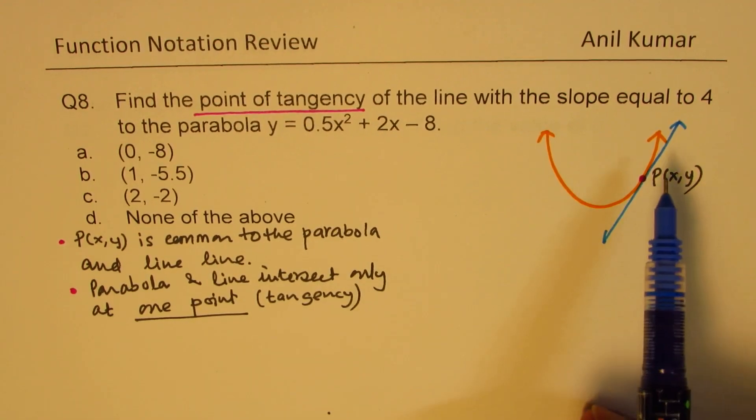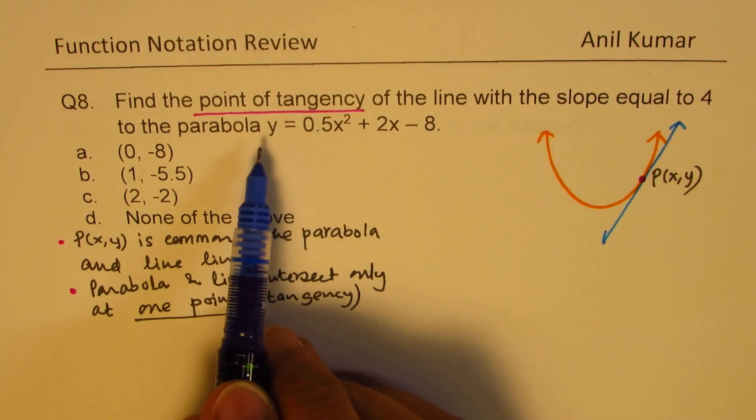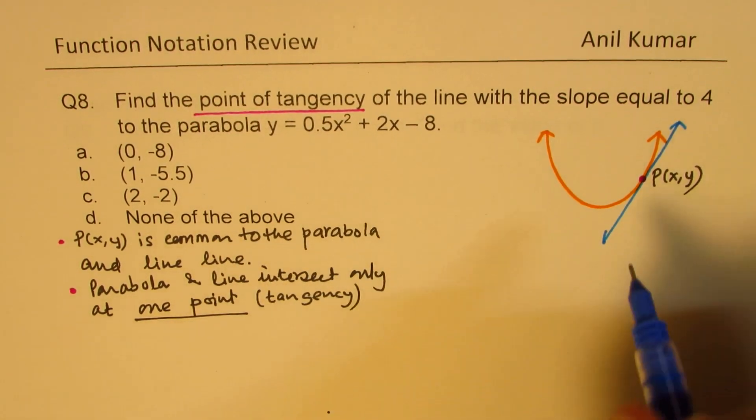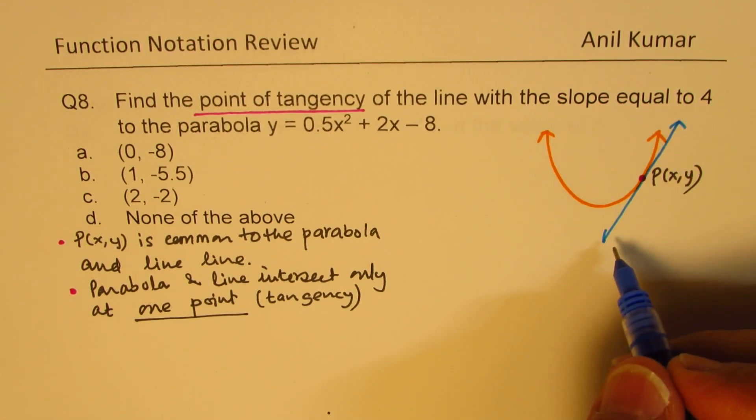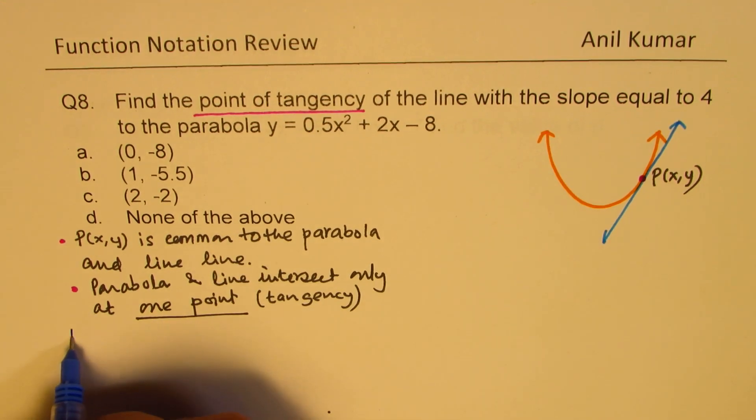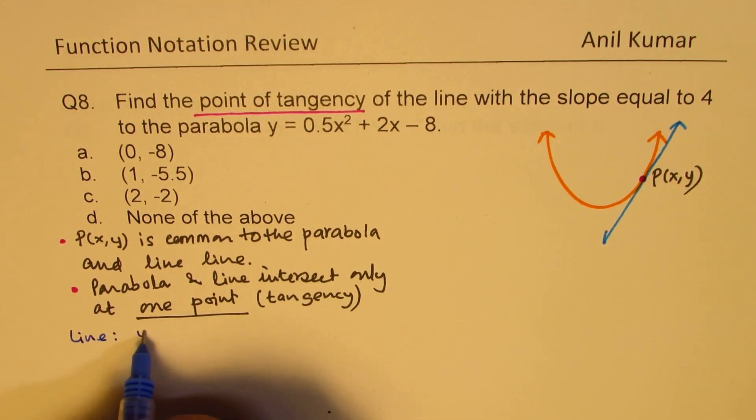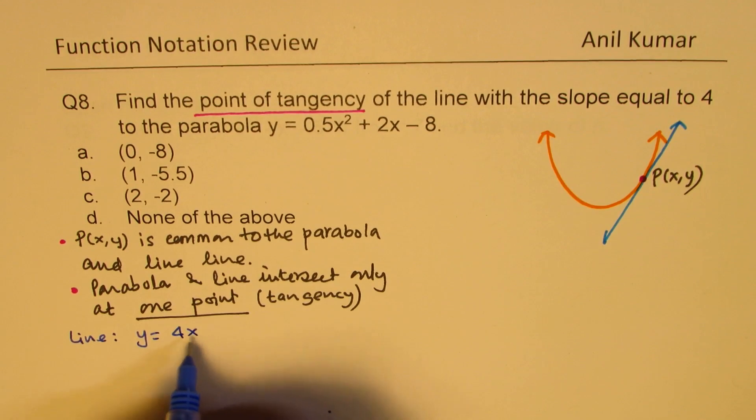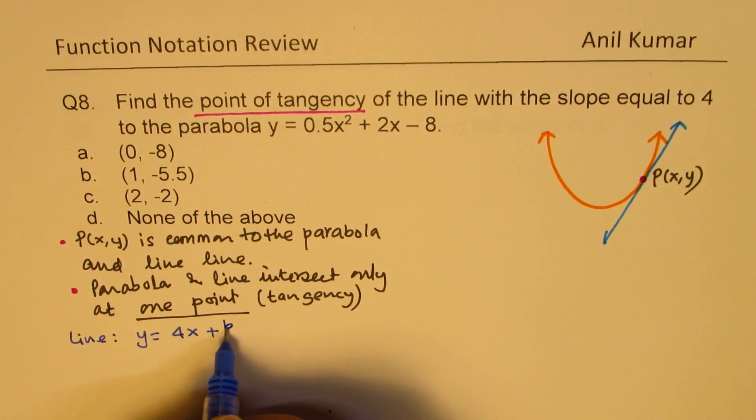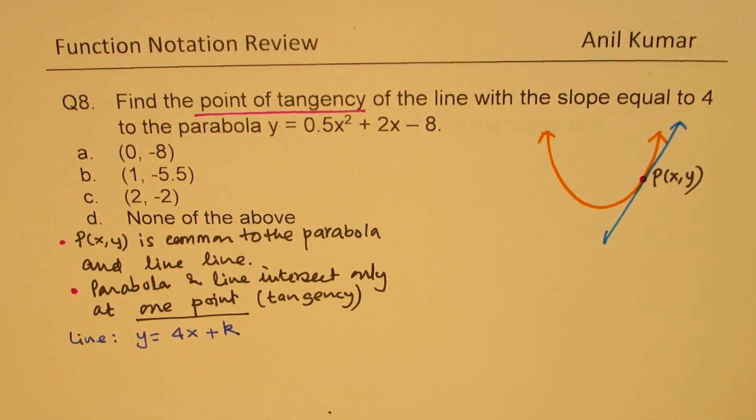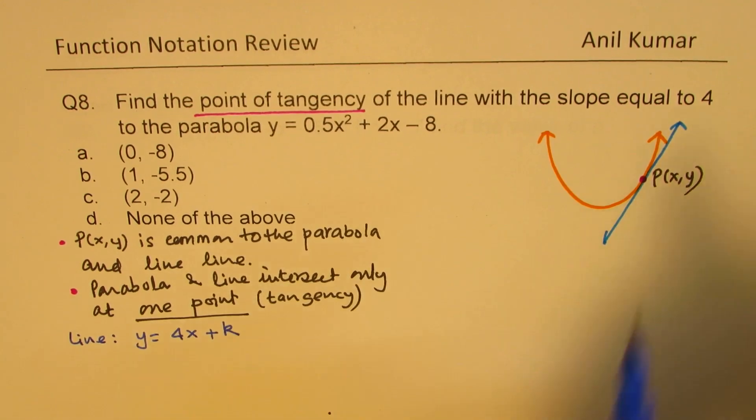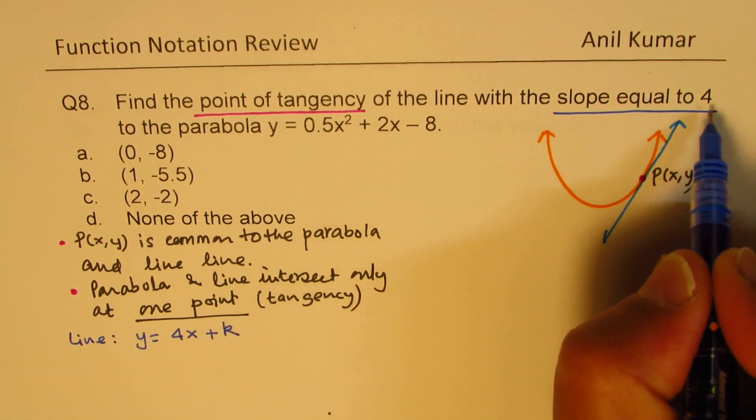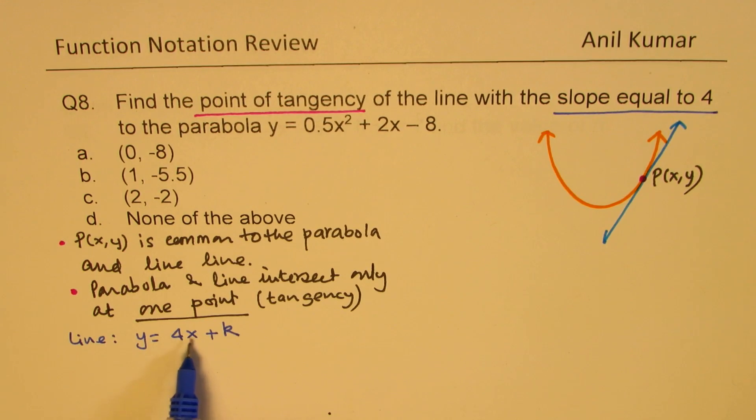Now to solve this, we already have the equation of the parabola. As far as the line is concerned, we can say the equation of the line can be y = 4x + k. We really don't know what this constant is. We know slope is 4, so y = 4x + k is the equation of the line.